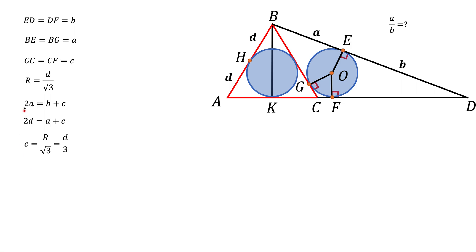Finally, we look at the three equations we've derived. First, notice that C and D are related: D equals 3 times C. We substitute this value of D into our equation and simplify to get a relationship between C and A. Then substituting C into the first equation gives us the final answer: A over B equals 5 to 9.